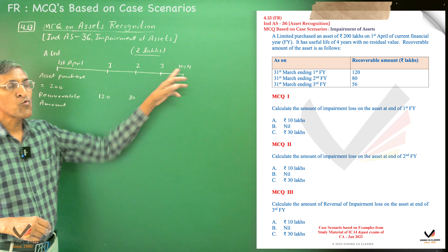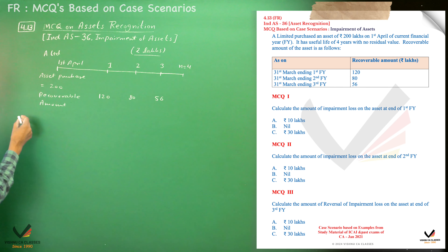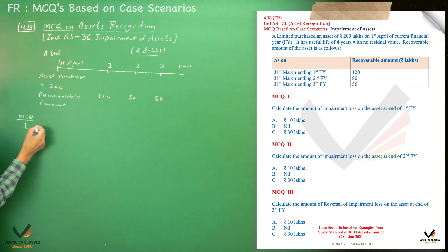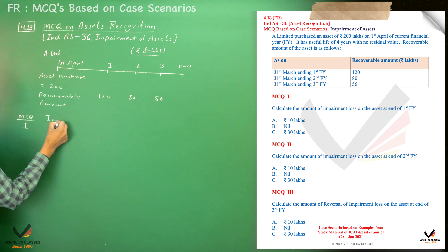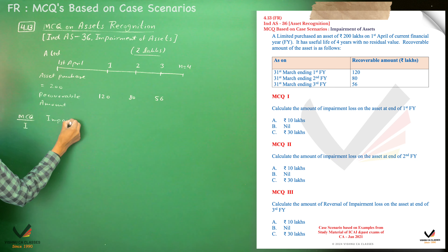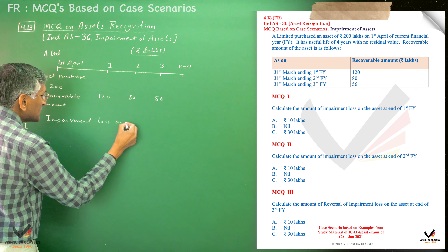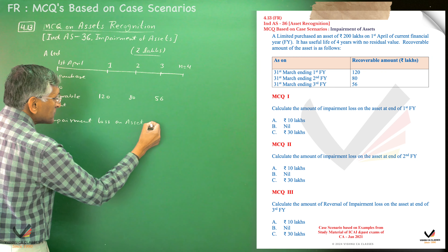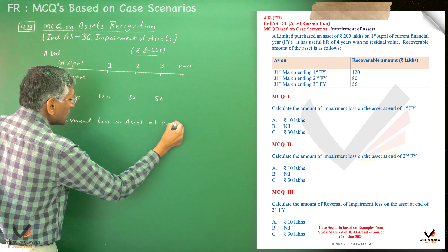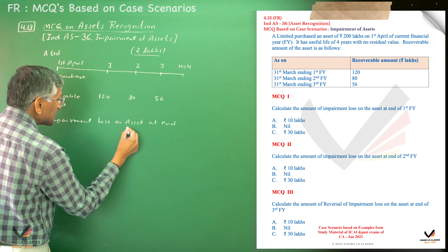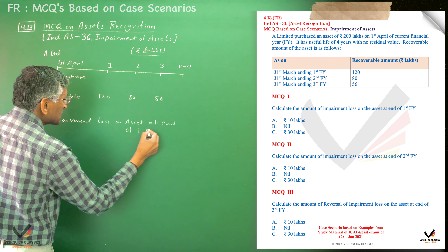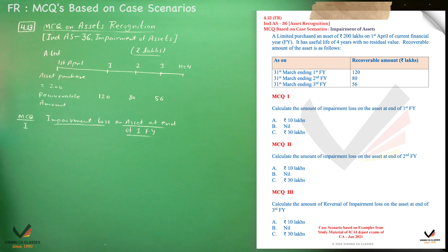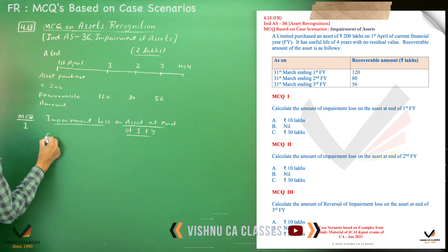The cost is Rs. 200 lakhs and the useful life is 4 years. The first MCQ is asking: how much is the impairment loss on the asset, if applicable, at the end of the first financial year? We need to calculate the annual depreciation to find the carrying amount.